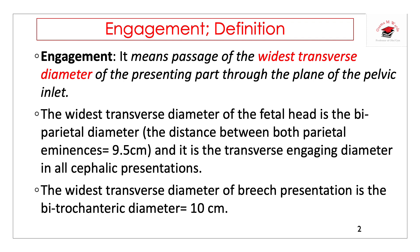The biparietal diameter is the transverse engaging diameter of all cephalic presentations, except in cases of asynclitism. In asynclitism, the transverse engaging diameter is the subparietal diameter, which is 9 centimeters. Asynclitism is the side tilt of the head, so the sagittal suture is not in equal distance in the pelvis — it is tilted to one side more than the other.